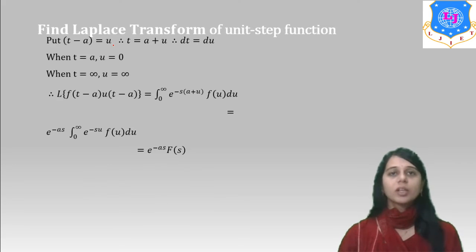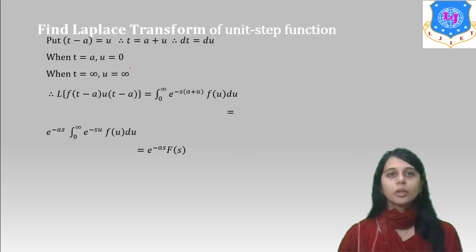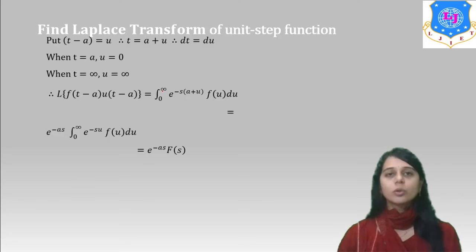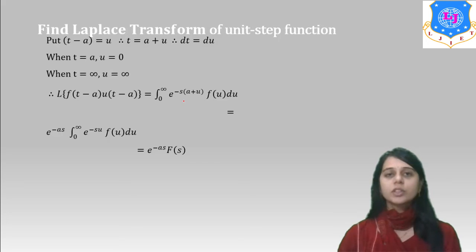Now, let t minus a equal u, so t equals a plus u, dt equals du. When t equals a, u equals 0, and when t equals infinity, u equals infinity. Converting this integral, we get the integral from 0 to infinity of e raised to minus s times (a plus u) times f(u) du. Taking e raised to minus as as a constant common, we get e raised to minus as times the integral from 0 to infinity of e raised to minus su times f(u) du.